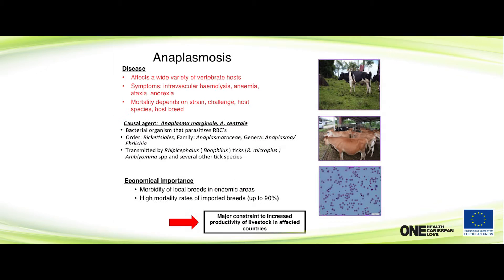Moving on to Anaplasma — very similar to Babesia with similar clinical signs. Mortality depends on the strain, the host challenge, and of course the breed. We know that imported cattle are very susceptible while local breeds are quite resistant. The water buffalo is also quite resistant. Again, it's a major constraint to livestock production in the region. It's a bacterium of the family Anaplasmataceae, transmitted by Rhipicephalus ticks; Amblyomma species can also transmit it.